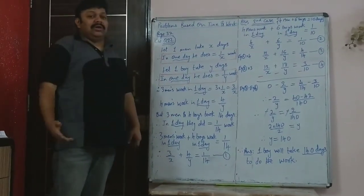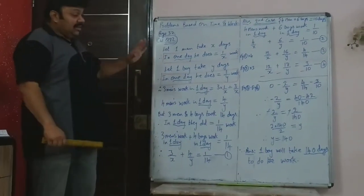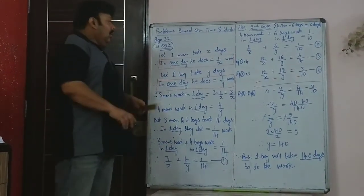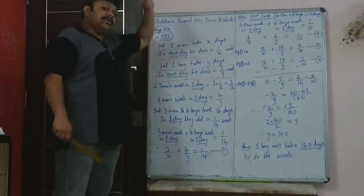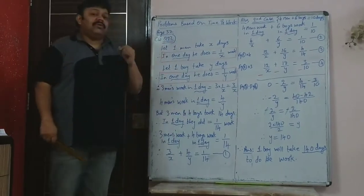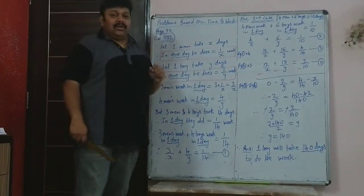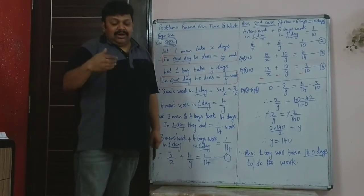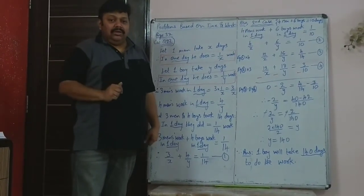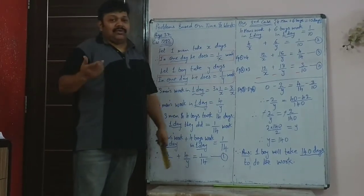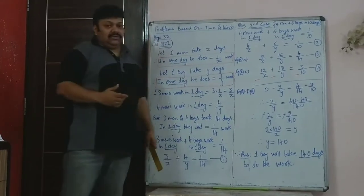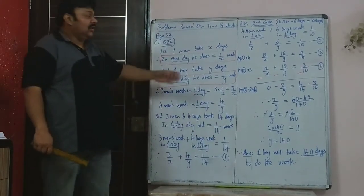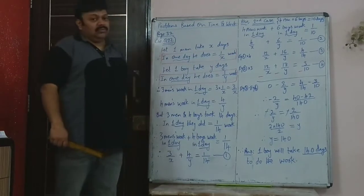The sum has to be logically explained. Let one man take x days to do the work alone. In one day, he will do 1/x of the total work. For example, if one man takes 50 days, in one day he does 1/50 of the total work. So if it is x days, one man does 1/x of the total work in one day.